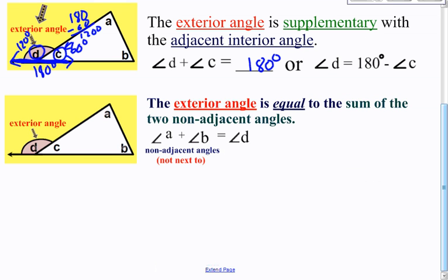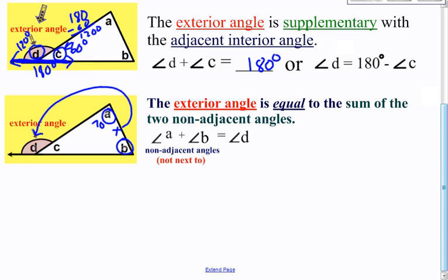This one a lot of people tend to forget — it's called the Exterior Angle Theorem. The exterior angle is equal to the sum of the two non-adjacent angles. The two non-adjacent angles to the exterior angle are A and B. If you add those together they'll equal D. So for example, 70 plus 40 equals 120 degrees — that's what D would be.